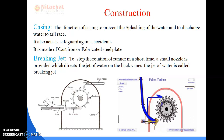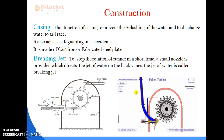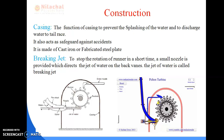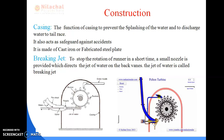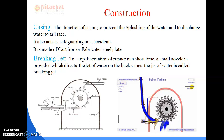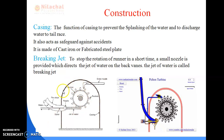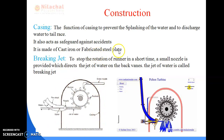Due to the high velocity, shocks are produced on the runner blades and various issues may occur. For this reason, a casing is used. The casing is made up of cast iron or fabricated steel plates. As shown in the diagram, this part is the casing. It is provided with a nozzle and also a brake nozzle. The brake nozzle means a braking jet.